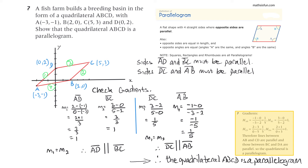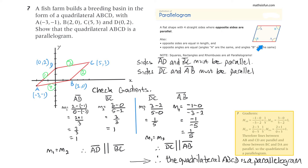For DC, using y2 minus y1 over x2 minus x1, the gradient is 1 on 5. For AB, using those coordinate points, the gradient is also 1 on 5. Since m3 equals m4, DC is parallel to AB. Therefore quadrilateral ABCD is a parallelogram — a key characteristic of a parallelogram is that opposite sides are parallel, which we have confirmed.